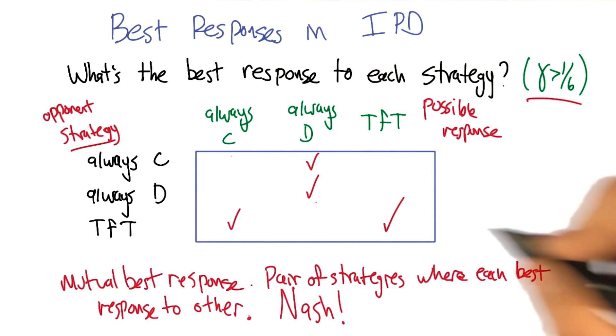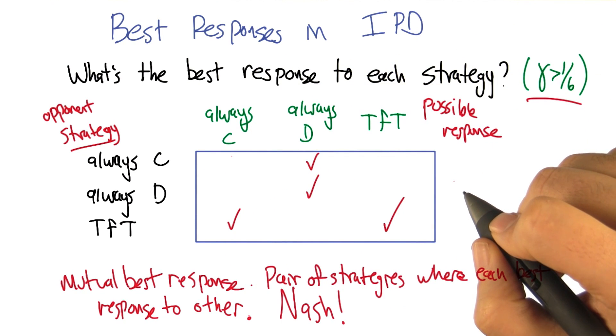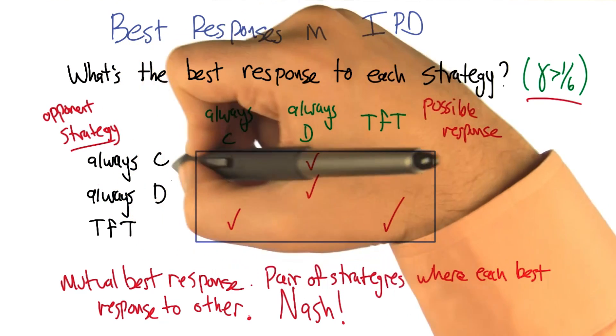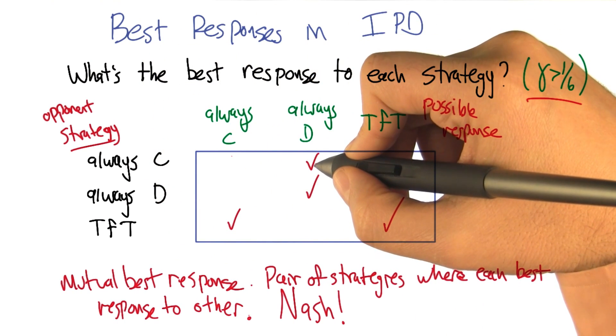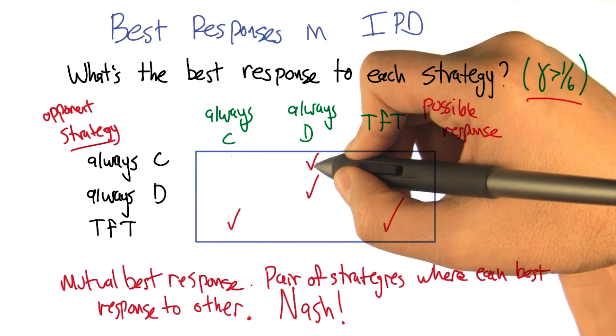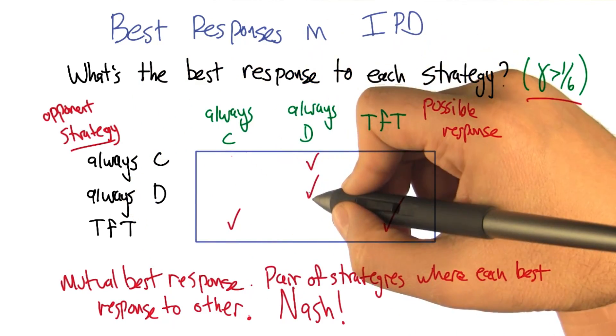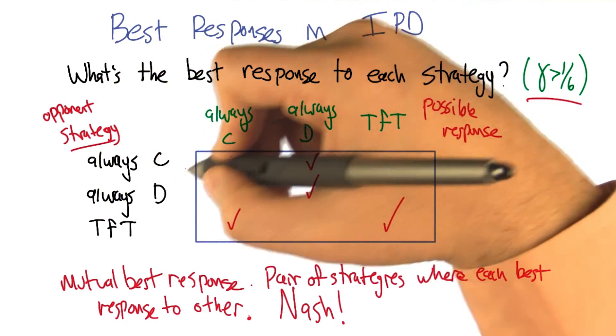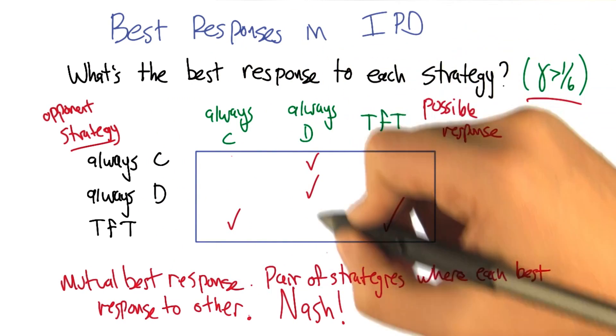Okay. So we can use this little table here to actually identify Nash equilibrium. So if one player plays always cooperate, then the best response to that is always defect. But the best response to always defect is always defect. So always cooperate is not part of a Nash equilibrium. Right.